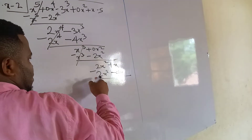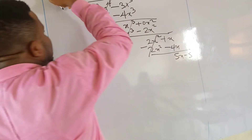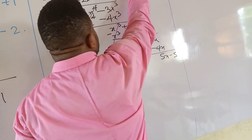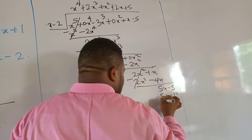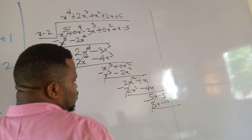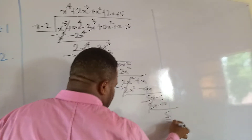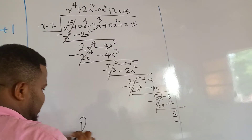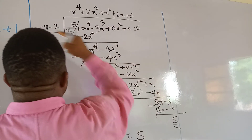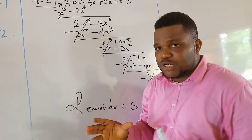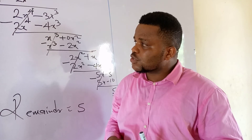We draw a line and introduce minus — 2x squared cancels. Minus times minus 4x gives plus 4x, so we have 5x. Bring down minus 5. x goes into 5x giving plus 5. Then 5 times x is 5x, and 5 times negative 2 is minus 10. We draw a line and introduce minus — 5x cancels, and minus times minus 10 is plus 10. So 10 minus 5 gives 5. Since x cannot divide into 5, this is where we stop. The remainder is 5 when dividing this polynomial by x minus 2. We can also verify using the remainder theorem, which will be explained in the next video. Thank you very much.